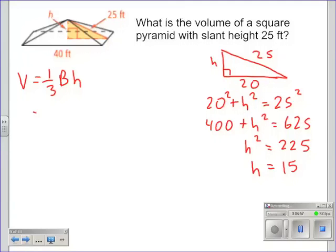So now I can go back to my formula and start substituting in 1 third times 40 squared times the height which I now found is 15, and now we can multiply that out. So my answer is 8,000 feet cubed.